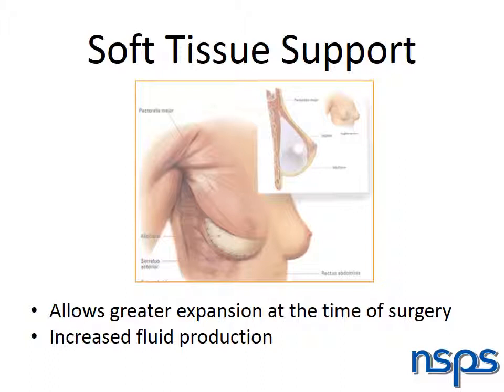Alloderm is a material made out of human skin that has been washed of all of its cells. It is not something you can see or feel. In this picture, alloderm is the lighter colored material at the bottom of the breast. Alloderm is more commonly used in nipple-sparing mastectomies and for reconstruction of patients with larger breasts. In general, we use alloderm in approximately one-third of our patients. Use of alloderm may increase fluid production after surgery, so drains may be in place longer than average.